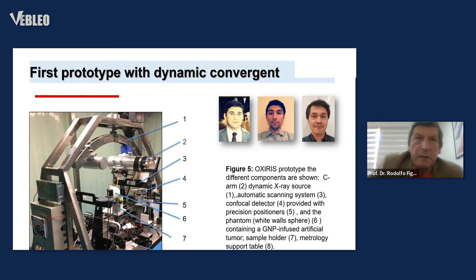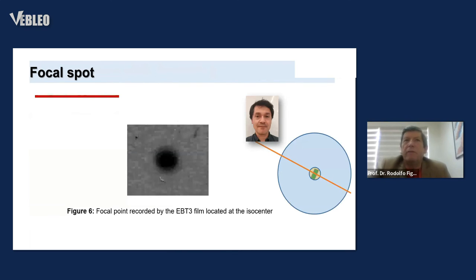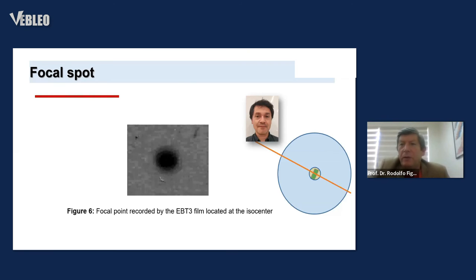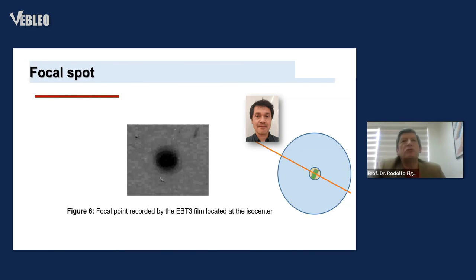The focal spot: the convergence beam is achieved by means of superposition of the concentrating geometrical focal spot, and the beam cross-sectional measurement. A focal spot size lower than two millimeters. Measurements have been performed using EBT3 radiochromic film dosimeter, horizontally positioned. The radio-opaque spot has been approximated by an ellipse. The size is approximately 2x2 millimeters square.